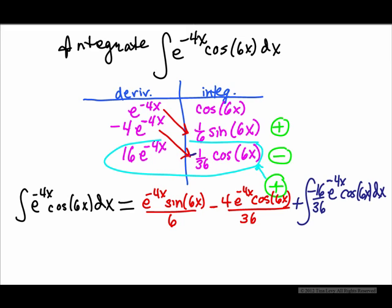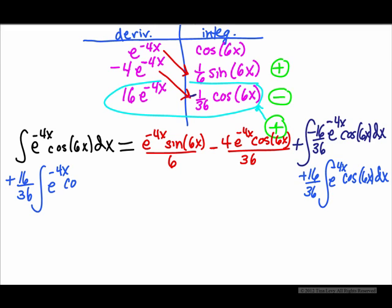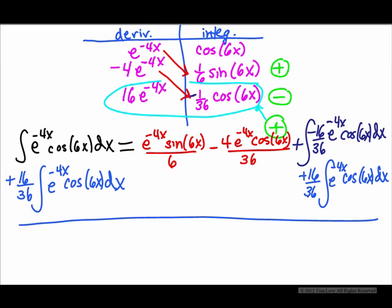The key here is we're going to have plus this integral — this is the last integral we're going to need, the simplified integral right here. Now I'm back to an e to the negative 4x cosine 6x, so I can add to both sides. I had a negative 16/36, so I'm going to add 16/36 e to the negative 4x cosine 6x dx to both sides. That gives me 36/36 plus 16/36 of that integral.